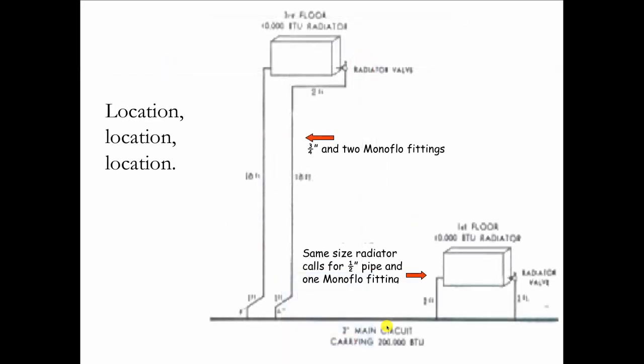This is from Bell & Gossett's design manual from the 1940s. They're showing a 10,000 BTU radiator on the first floor and another one on the second floor. And it's the same radiator, but the difference is on the first floor, it only needs one half inch monoflow fitting to work. That would be on the return side. But if we move that radiator up to the second floor, because the run to it is longer, and the run back from it is longer, we'd have to increase the pipe size to three quarter and use two three quarter inch monoflow tees down here, even though it's the exact same radiator.